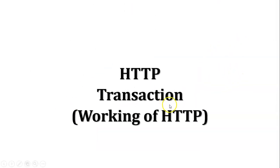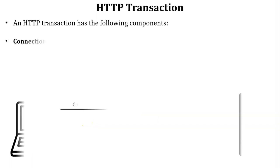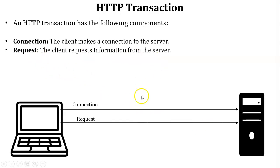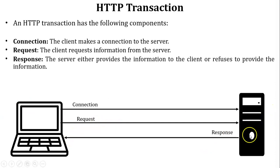Next, let's look at the HTTP transaction or working of HTTP. An HTTP transaction has the following components. First is connection — the client makes a connection to the server. Before requesting a file, a connection is required. Next is request — the client requests information from the server. Next is response — the server provides the information to the client using the response. Sometimes the server will refuse to provide the information.